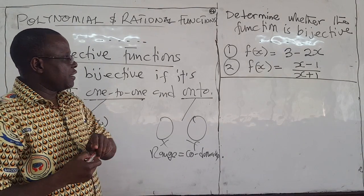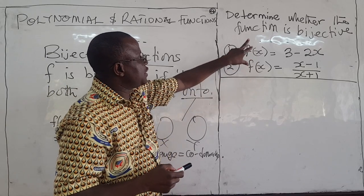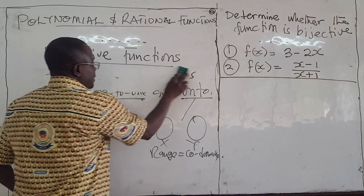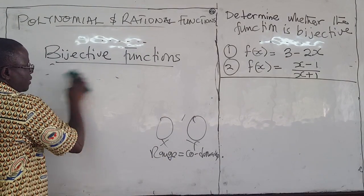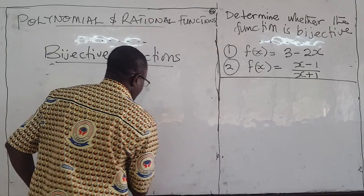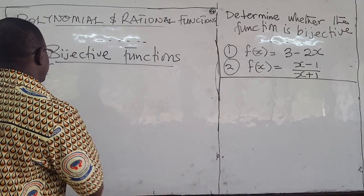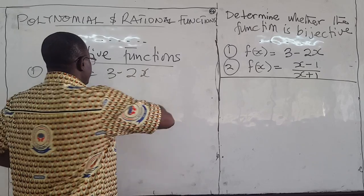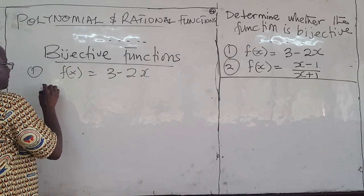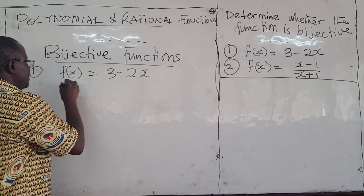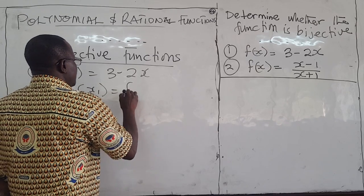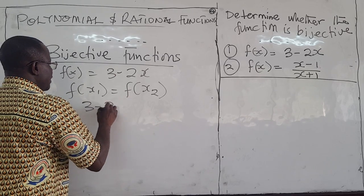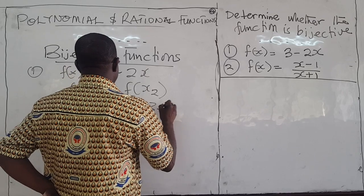So let's use two examples to illustrate that. We want to determine whether these functions are bijective. Let's do the first one. We know how to prove one-to-one and surjectivity. So for f(x) = 3 minus 2x, you let x1 and x2 be real numbers.